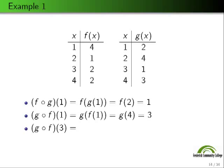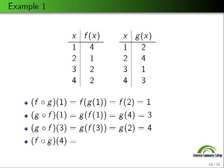Let's look at g∘f(3). We plug f(3) into g. f takes 3 and sends it to 2, so g(f(3)) = g(2), and g takes 2 and sends it to 4. So g∘f(3) = 4. Next, f∘g(4): we take g(4) and plug it into f. g sends 4 to 3, so we have f(3), and f maps 3 to 2. So f∘g(4) = 2.